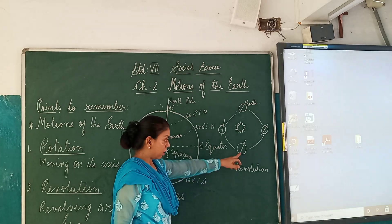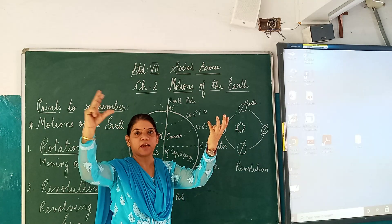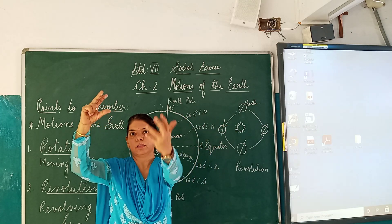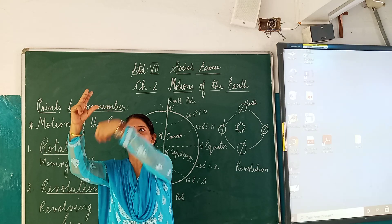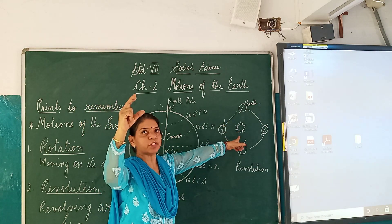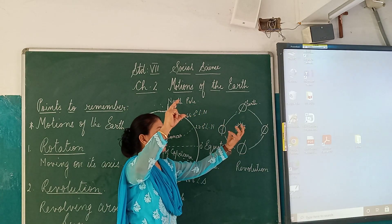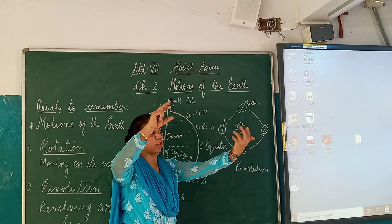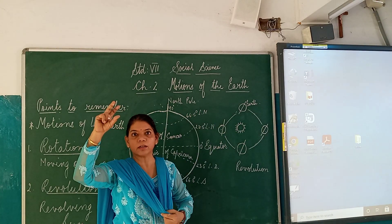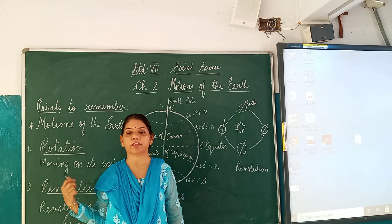It is rotating on its axis. See, this is the sun and the earth is moving around it, crossing past the sun slowly and then coming back around. This is the sun and this is the earth — it is moving this way, on its axis. So we will now continue with the text.